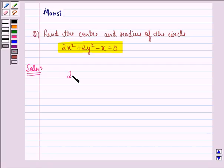The equation of the circle given to us is 2x² + 2y² - x = 0. If we divide throughout by 2, we get x² + y² - x/2 = 0.